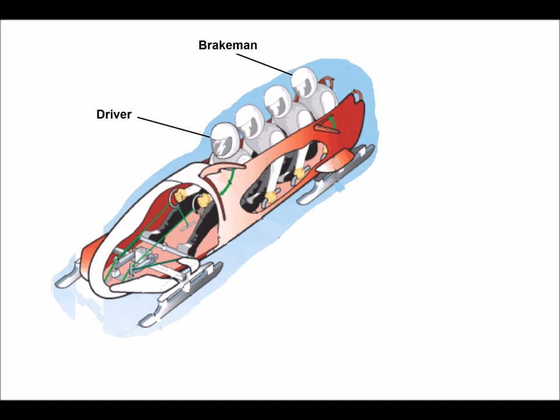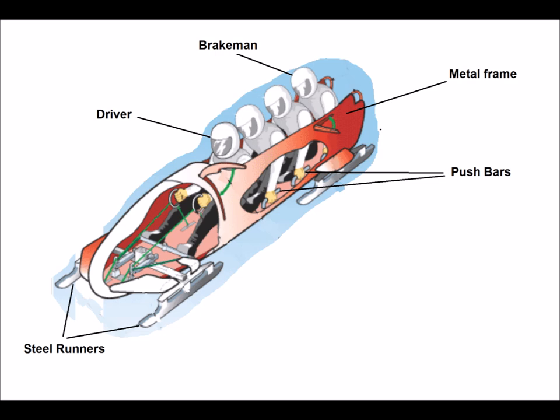A fast and efficient bobsled is the key to winning a race. Modern sleds combine a light metal frame, steel runners, push bars, a steering system, and an aerodynamic body. These sleds are designed to be as light as possible to allow greater acceleration.